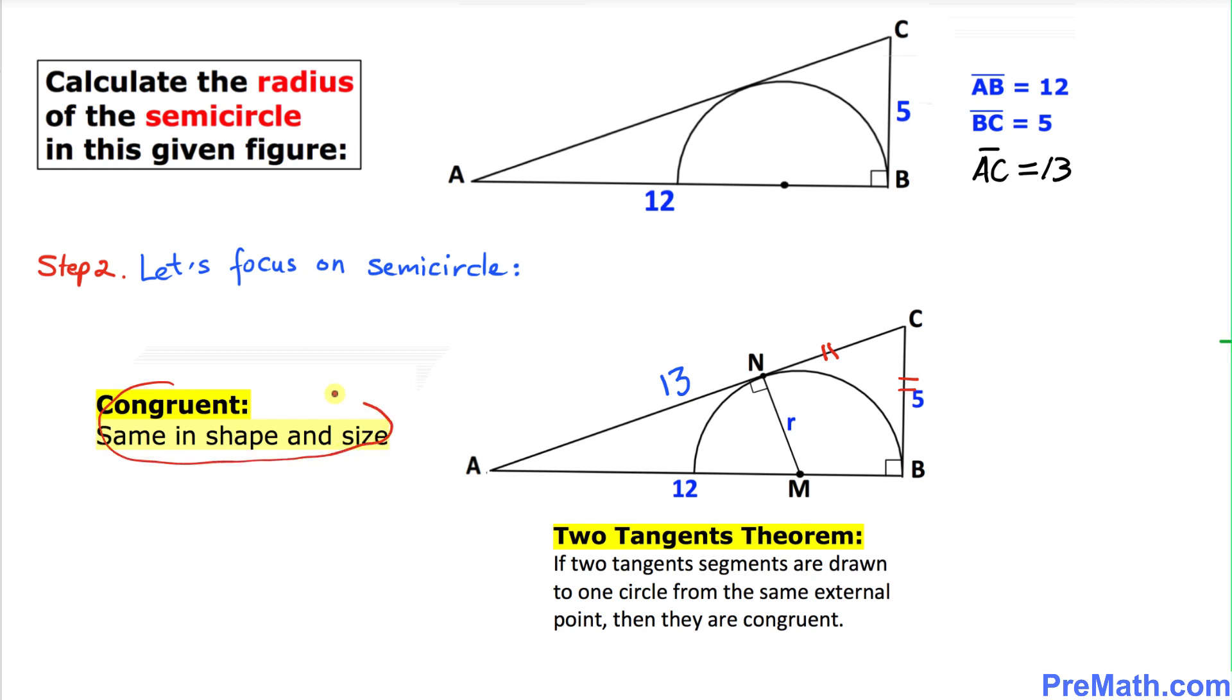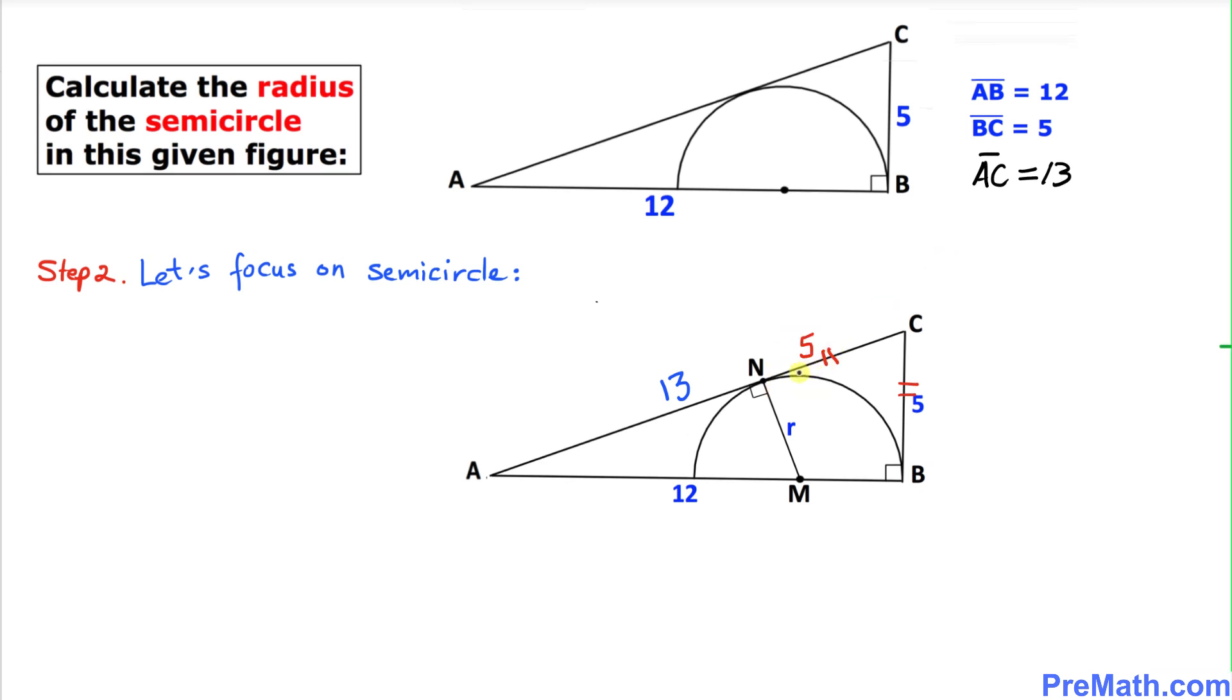Congruent means same in shape and size, so therefore this side NC is going to be 5 units as well. We know that AC is 13 units and NC is 5, which means this segment AN is going to be 8 units.